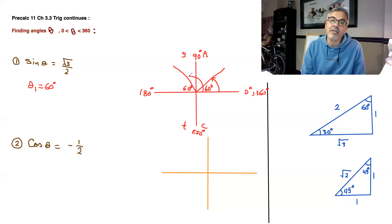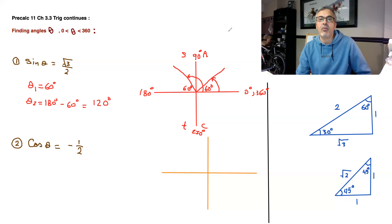The second angle is going to be this one, and this one is theta 2. And to find theta 2, if you go all the way to 180, take away the 60, it'll give you this portion right here. So if you go 180 degrees minus 60 degrees, it gives you 120 degrees, and that's the answer for that one.